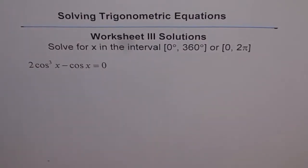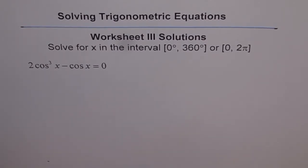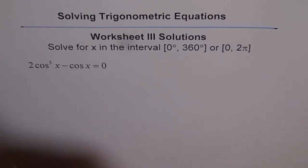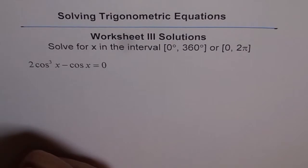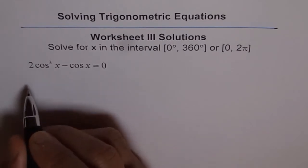Solving trigonometric equations, worksheet 3 solutions. This is the last one of worksheet 3. The equation is 2 cos cubed x minus cos x equals 0. Here we can factor and then find the solution.